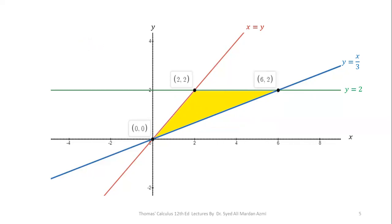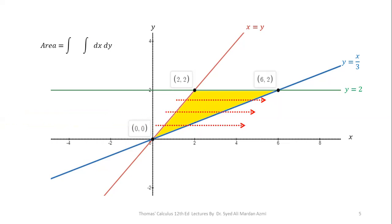So the best choice for this particular question is to select x as the inner variable and y as the outer variable. The limits of x are y to 3y, because the horizontal arrows enter through the boundary where x = y and exit through the boundary where x = 3y.